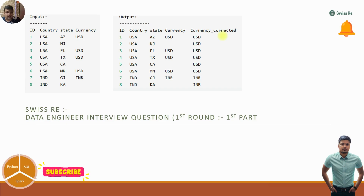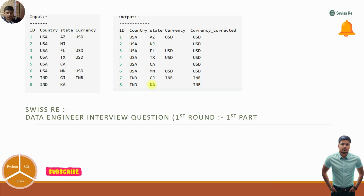They then asked: what if I have a huge amount of data — say 150 countries with many states and some currencies still missing? For that I said I will create a lookup table. I will select only the country and currency columns, apply distinct to get unique records, and then use a join to fill in the missing currency values in the main table.